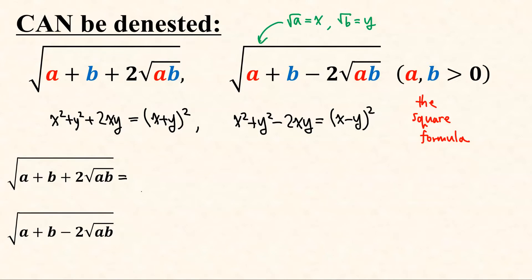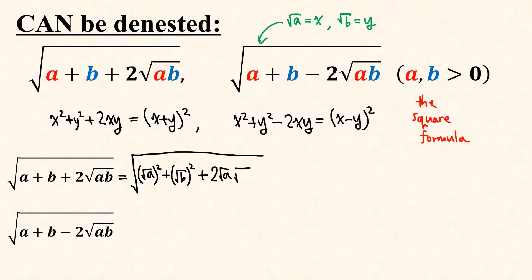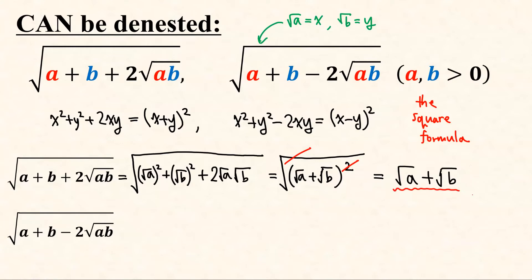Then for the first one, a can be written as (square root of a) squared, b can be written as (square root of b) squared, and the remaining part can be written as 2 times square root of a times square root of b. By our square formula, this is simply (square root of a plus square root of b) squared. So we can cancel the square and square root to obtain square root of a plus square root of b.